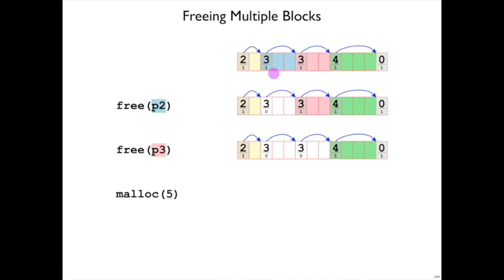And then we free this blue block here. That means that its allocation bit gets set to 0. No problem there. Free the pink block. Its allocation bit gets set to 0. No problem there.